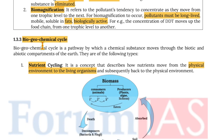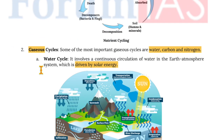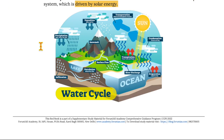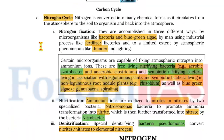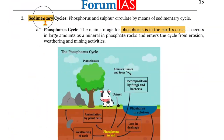Let's start with biogeochemical cycles. A biogeochemical cycle is a pathway by which chemical substances move through the biotic and abiotic compartments of the earth. They are of the following types: nutrient cycling, gaseous cycles, and sedimentary cycles.